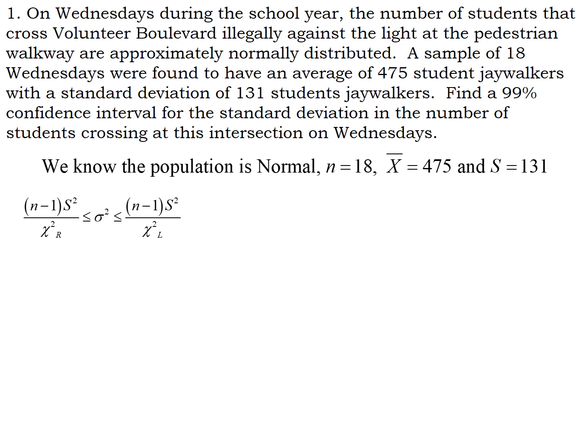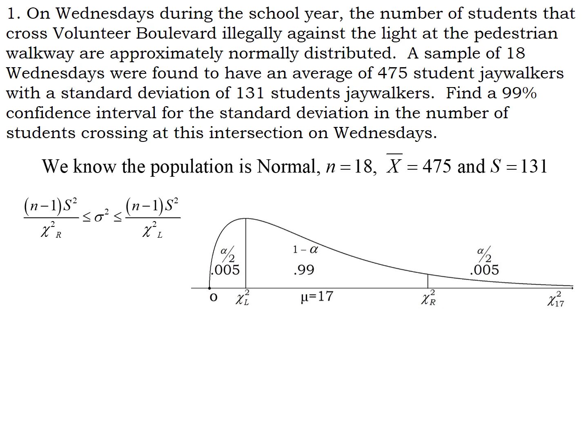We chose our formula. We know n is 18, so n minus 1 will be 17. We know s, so we can plug in s and we'll have s squared. We need to find our two chi-squared scores, so we'll start by drawing the graph. Remember the chi-squared graph is not symmetric and is not centered at zero, so these are not plus and minus the same number for our cutoffs — there are two different cutoffs, a left and a right.